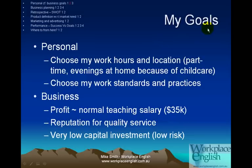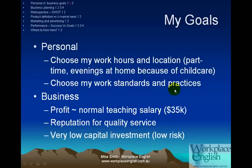Let's have a look at my goals — these were my goals in 2003. I wanted to choose my work hours and my work location. I wanted to work part-time and make use of my evenings to work at home, because I had plans to start a family and I wanted to be able to care for my children. I also wanted to choose my work standards and practices — how things were to be done — because often I'd worked in places where I didn't necessarily agree that they were doing things the way they ought to be done. In order to achieve those personal goals, I wanted that business to give me about the same amount of money as a normal teacher, so around $35,000 a year. So that's my profit goal.